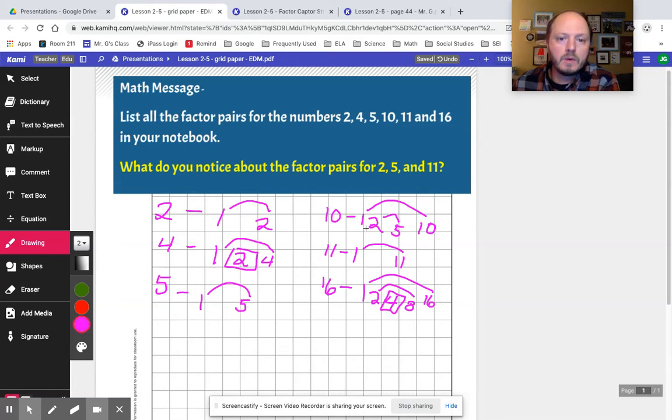Now, what do we notice about the factor pairs for 2, 5, and 11? Well, we've had a little sneak preview of this conversation already. And yes, these three numbers here, of these ones that we worked on, have only how many factors? 2.